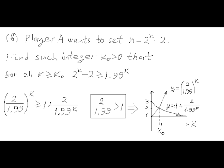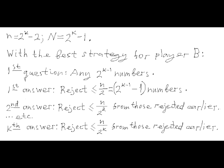Both functions are continuous, and clearly they have one single point of intersection. The smallest positive integer K0 greater than this intersection point on the K-axis is our number K0. So for any K that is at least K0, we set lowercase n to 2^K minus 2 and capital N to 2^K minus 1. We need to demonstrate at least one scenario in which a winning strategy is not guaranteed for player B.